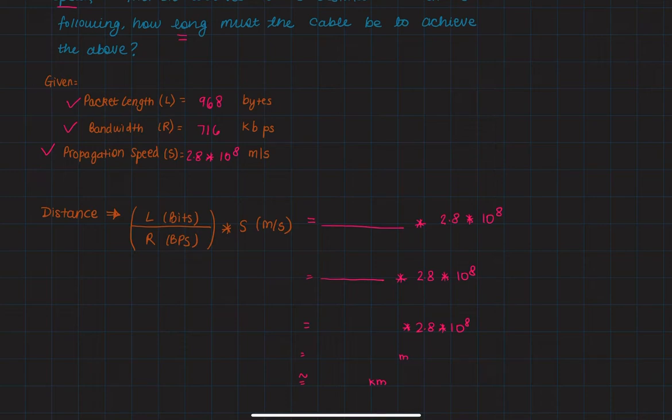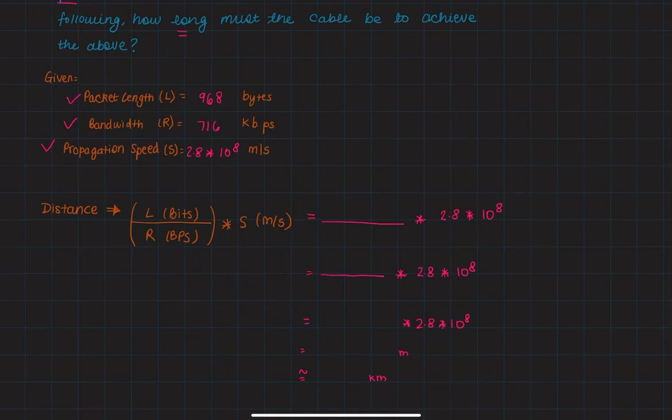Now we're going to have to do a little bit of conversion. To convert our numerator to bits, we're going to multiply 968 by 8, and we're going to multiply 716 by 1000.